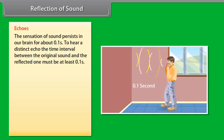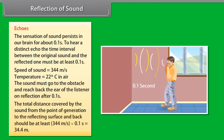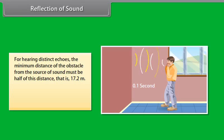Echoes are produced by the reflection of sounds from such surfaces. The sensation of sound persists in our brain for about 0.1 second. To hear a distinct echo, the time interval between the original sound and the reflected one must be at least 0.1 second. If we take the speed of sound to be 344 meter per second at a given temperature, say 22 degrees Celsius in air, the sound must go back to the obstacle and reach back the ear of the listener on reflection after 0.1 second. Hence the total distance covered by the sound from the point of generation to the reflecting surface and back should be at least 344 meter per second into 0.1 second is equal to 34.4 meters.